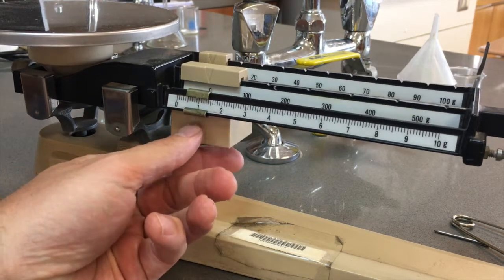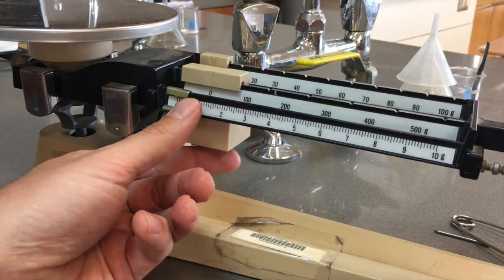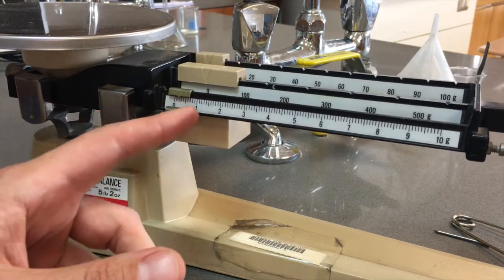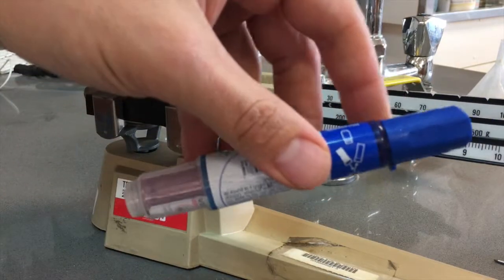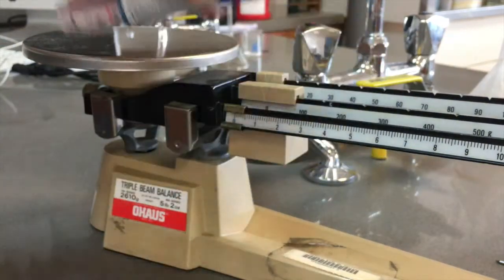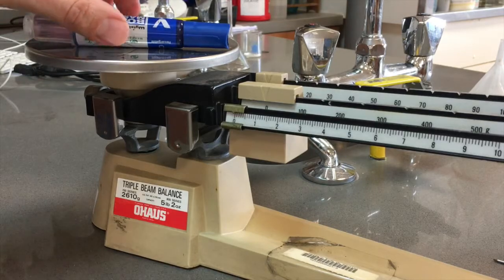And the masses on this, they're called sliders. They can slide across, and then we put something on what's called the pan. The pan is right here, so I'll put this marker on the pan.